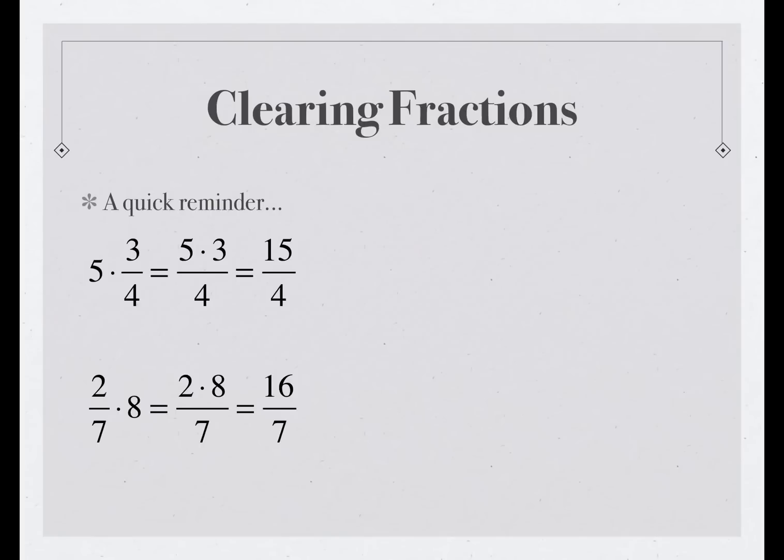Now, I'd like to show you what algebraic terms look like when they have fraction coefficients. In an equation, you might see either one of these things, and they both mean the same thing. 2x over 7 is exactly the same thing as 2/7 x. And if you're asked for the coefficient of x, in each case, the coefficient is 2/7.